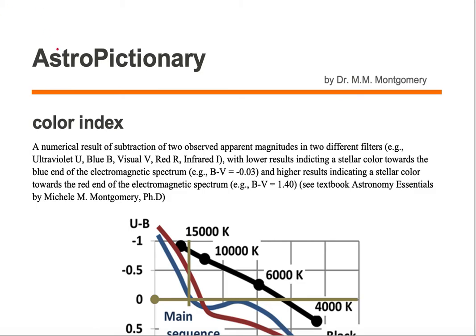Let's take a look at this color index. We're going to use the examples of B and V, but we could also use U and B, maybe U minus B, but we're specifically going to look at B and V. We want to subtract V from B and get a number.